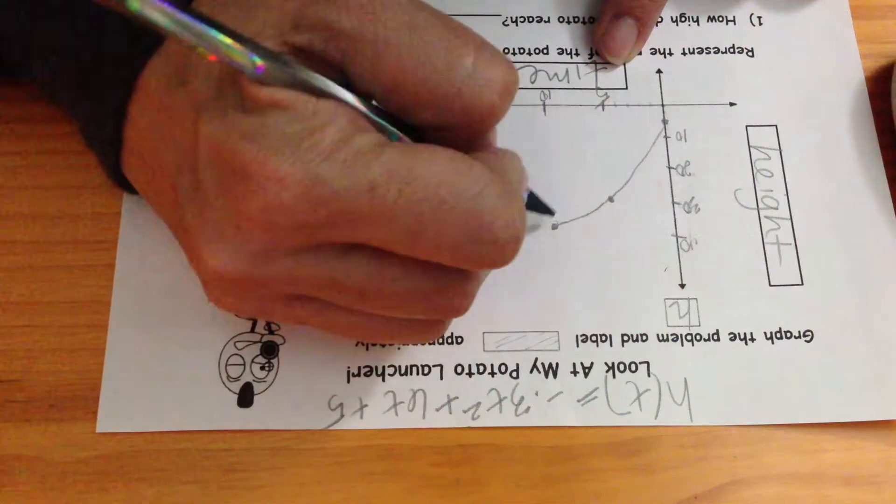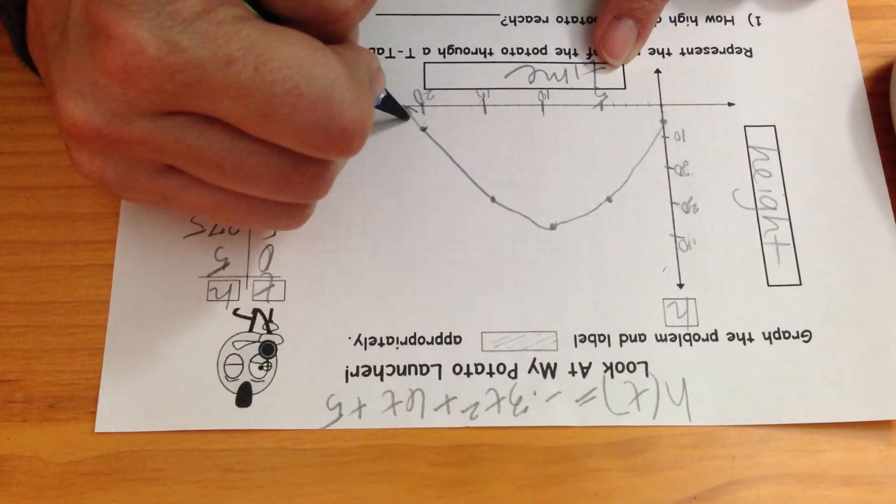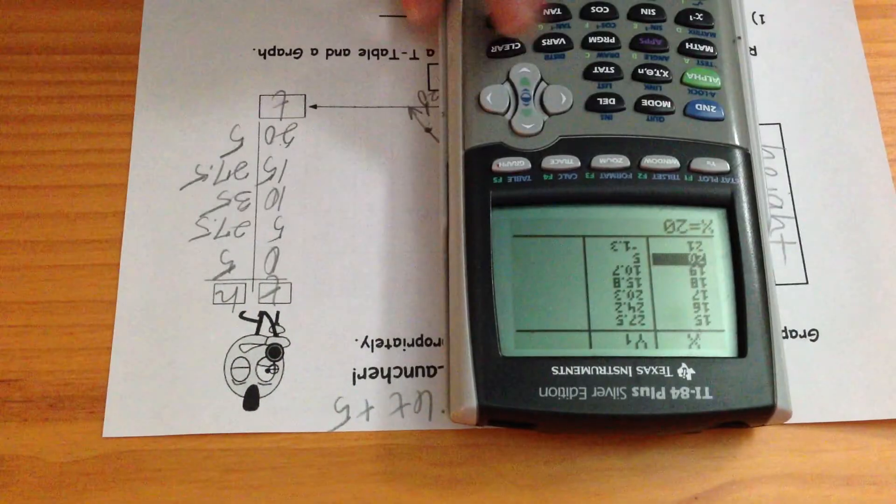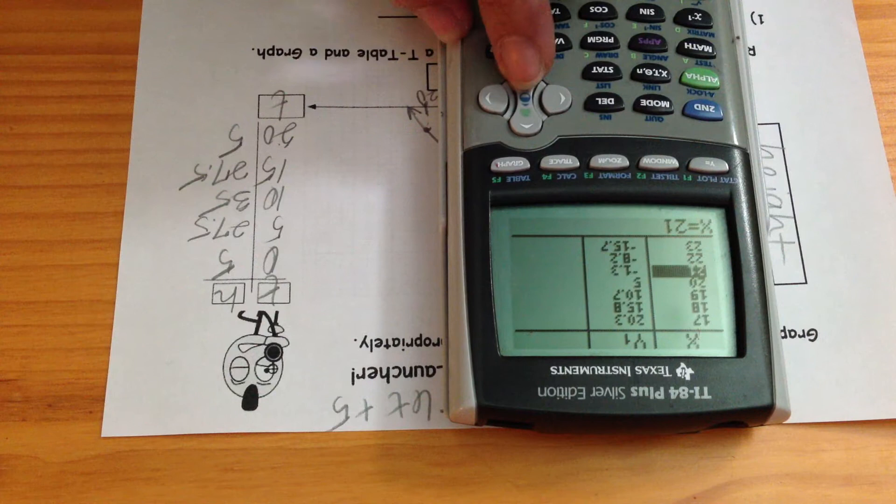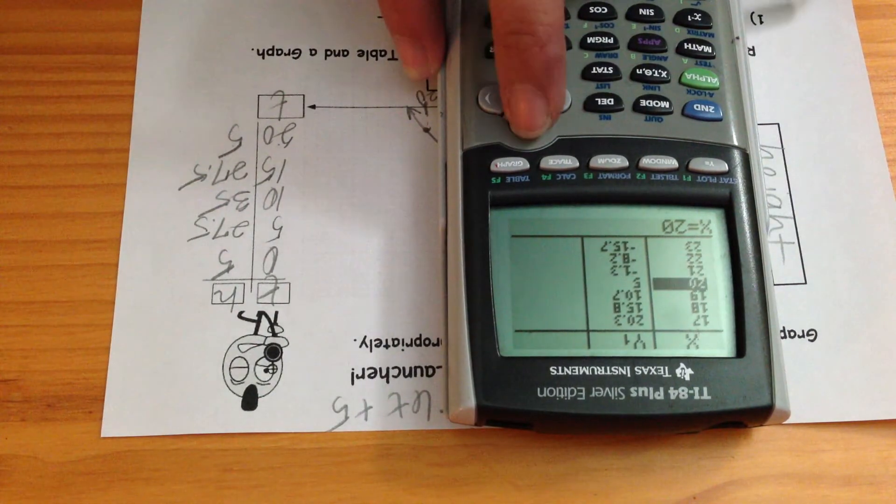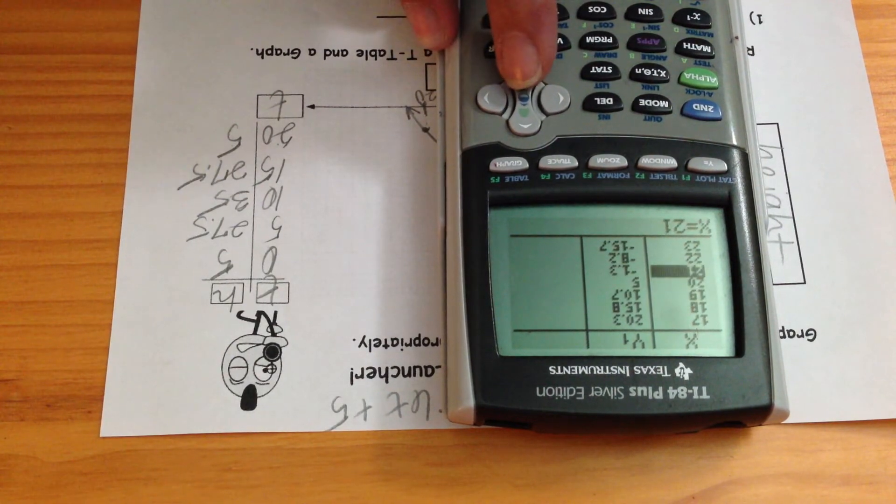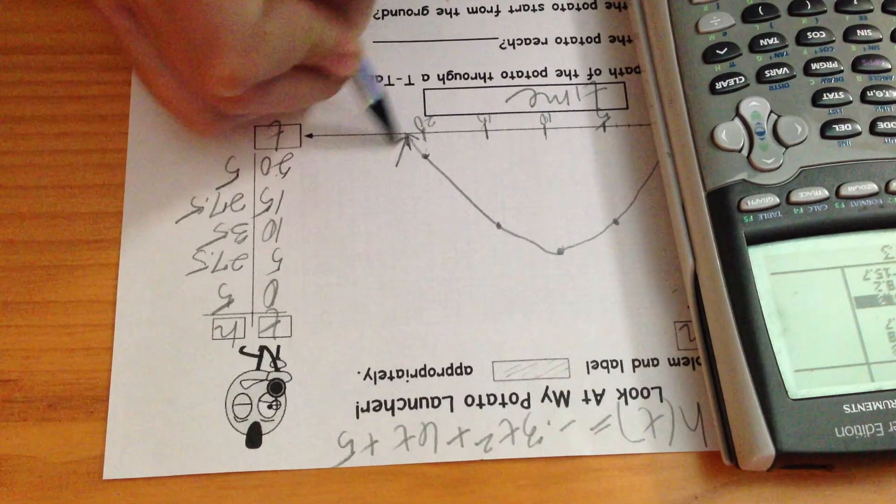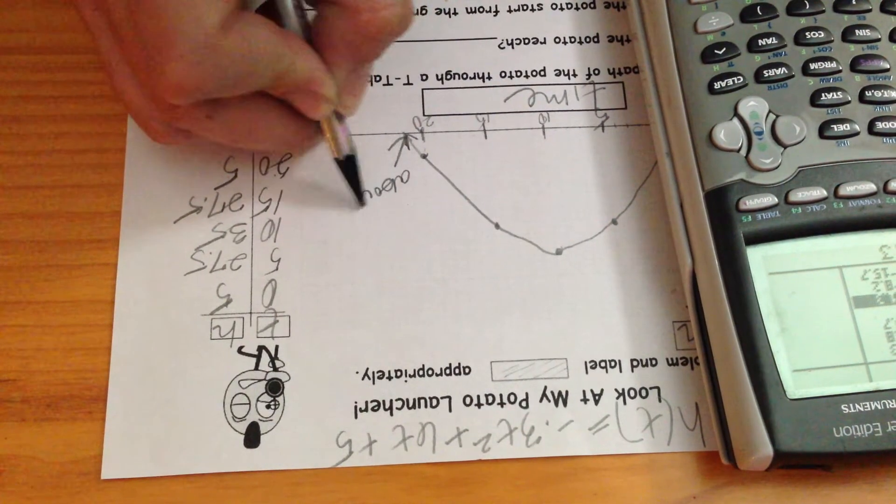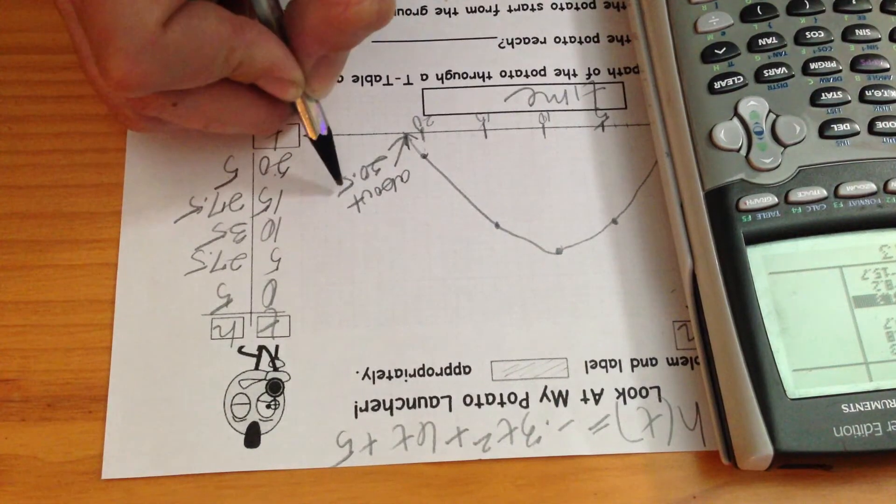So actually I don't see the potato land yet, it's going to land over here. I'm curious about where that is because it's in between, it's going to land between 20 and 21 seconds because it's not going to go underground, so I'm going to approximate that at about 20 seconds, cool, I think I'll need that later.